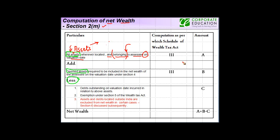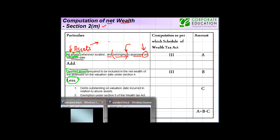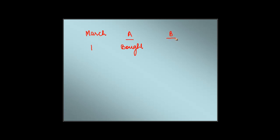What this means is that if the asset is not belonging to the assessee on the valuation date, then it is not supposed to be included in the net wealth. Let me give you an example. Suppose an assessee — here is A, here is B — A bought a car and B bought a house, and they both did it on March 1. On March 31, A sold the car.